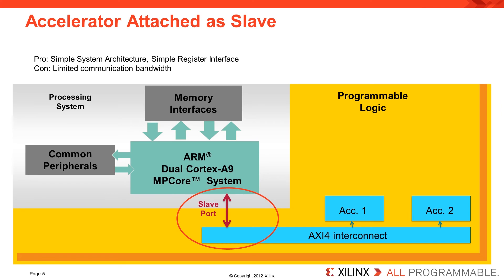With Zynq, there are several techniques for attaching coprocessors. The first method is attaching a coprocessor to a general purpose slave port on the PS. In this case, the coprocessor is accessed as a register interface with a memory mapped address. It is the simplest way of attaching a coprocessor. Some users may find it easiest to drag and drop a GPIO interface into their design and then attach the coprocessor to the GPIO interface. This approach is best for applications not requiring high bandwidth or large amounts of data transfer.